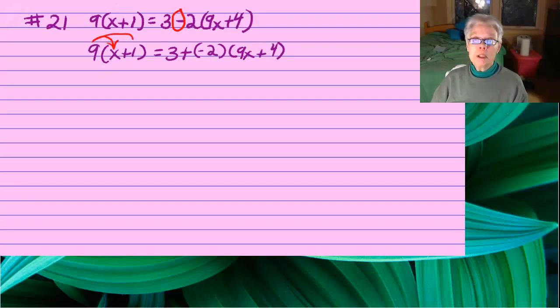Now I'm going to distribute the 9 to the x and to the 1, and the negative 2 to the 9 and to the 4. Here we go: 9x plus 9 equals 3 plus negative 18x minus 8.